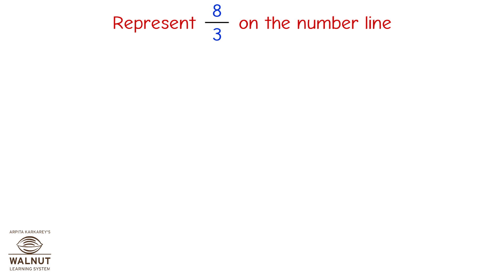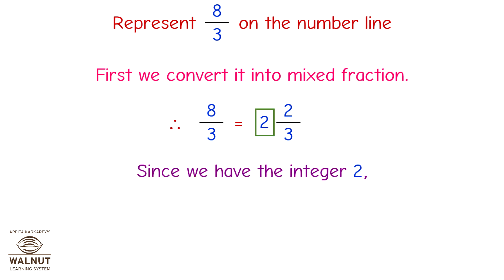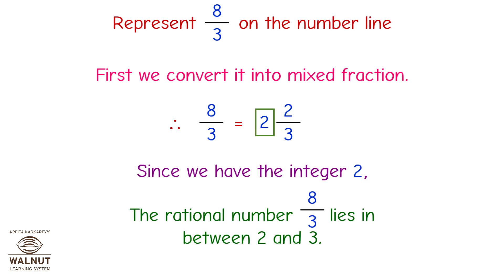Represent 8 upon 3 on the number line. First, we convert it into a mixed fraction. Therefore, 8 upon 3 is equal to 2 and 2 upon 3. Since we have the integer 2, the rational number 8 upon 3 lies in between 2 and 3.